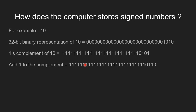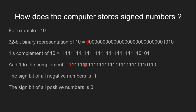Now, some key points to remember: the sign bit of all negative numbers is 1, and the sign bit of all positive numbers is 0. The sign bit is the leftmost bit, also called the most significant bit, in any binary representation. So the sign bit of 10 is 0, and the sign bit of minus 10 is 1.